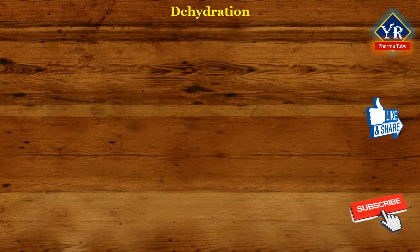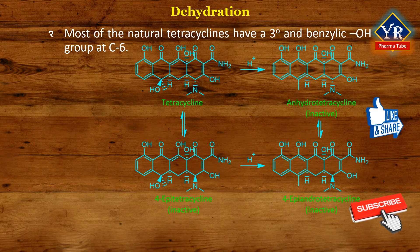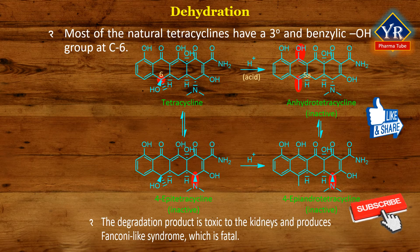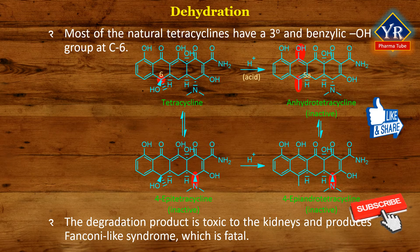Dehydration or degradation of tetracycline in the presence of acid. Most of the natural tetracyclines have a tertiary and benzylic hydroxyl group at C6. This function has the ideal geometry for acid-catalyzed dehydration involving the C5A alpha-oriented hydrogen. The resulting product is a naphthalene derivative, and there are energetic reasons for the reaction proceeding in that direction. C5A6-anhydrotetracycline is much deeper in color than tetracycline and is biologically inactive. Not only can inactive 4-epi-tetracycline dehydrate to produce 4-epi-anhydrotetracycline, but anhydrotetracycline can also epimerize to produce the same product. This degradation product is toxic to the kidneys and produces a Fanconi-like syndrome that has been fatal. Tetracyclines that have no C6 alpha-hydroxyl groups, such as minocycline and doxycycline, cannot undergo dehydration and thus are completely free of this toxicity.